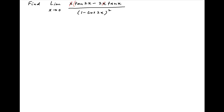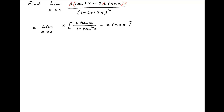We start by taking x common in the numerator of the given limit. Therefore this limit can be written as limit x tending to 0, x times [tan 2x — which can be replaced with 2 tan x divided by 1 minus tan²x — minus 2 tan x] divided by (1 minus cos 2x)², which is equal to (2 sin²x)².